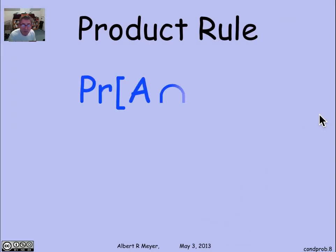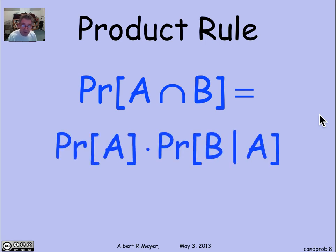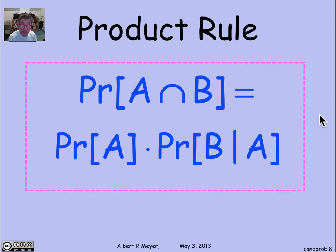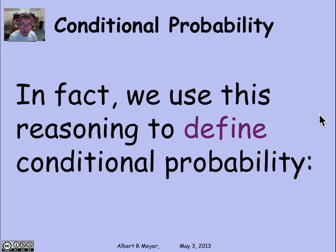Formally, what we were using is the product rule: the probability that event A occurs and event B occurs is simply the probability of A times the probability of B given A. That's the fundamental rule of conditional probabilities — the product rule — and it's something to be memorized. In fact, this product rule is not a corollary; it's really the definition of conditional probability.